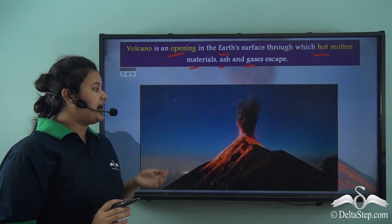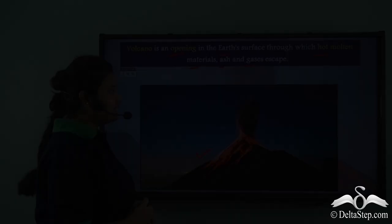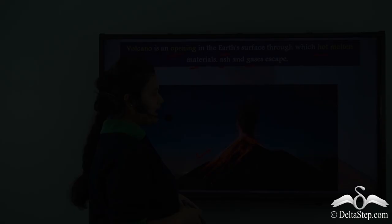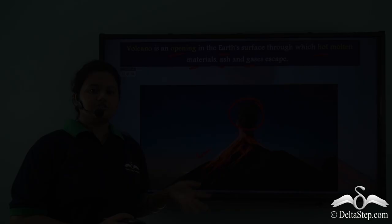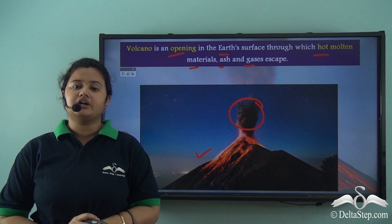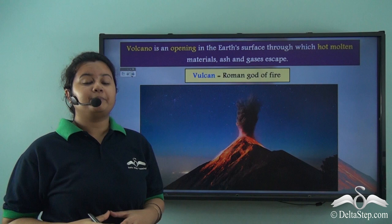See here we have a picture of a volcano, and from this picture we can see that when a volcano erupts, hot molten materials come out and also ash and gases come out through a volcano. So this type of structure is called a volcano and it is a natural phenomena through which hot molten rocks come out to the Earth's surface.